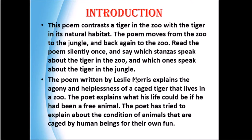So, the introductory part of the poem. This poem contrasts a tiger in the zoo with a tiger in its natural habitat. The poem moves from the zoo to the jungle and back again to the zoo. Read the poem silently once and say which stanza speaks about the tiger in the zoo and which one speaks about the tiger in the jungle.